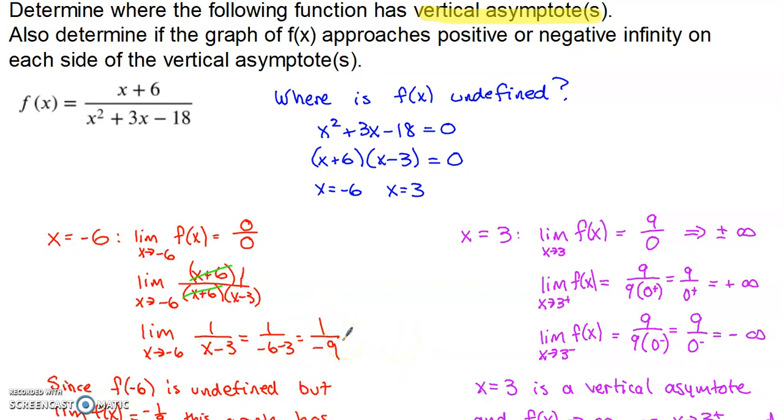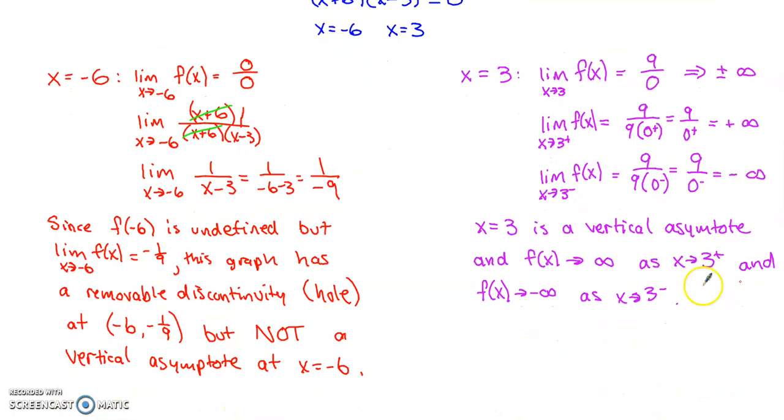This tells us we do not have a situation where the graph moves up or down off the coordinate plane. Near x = -6, we have an undefined location. There's no point on the graph at x = -6, but there is a hole at y = -1/9.